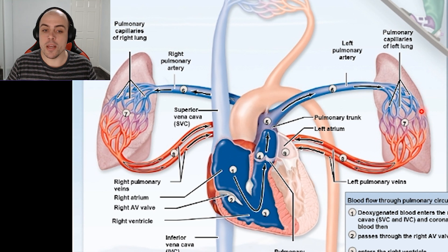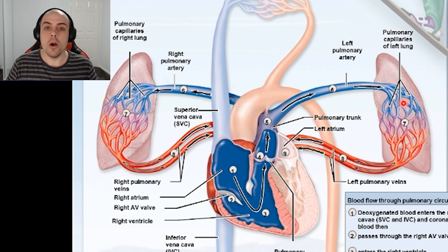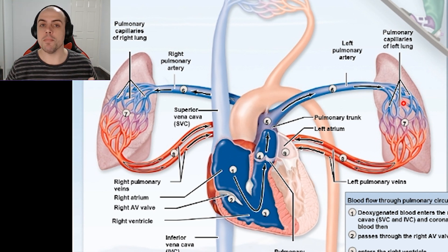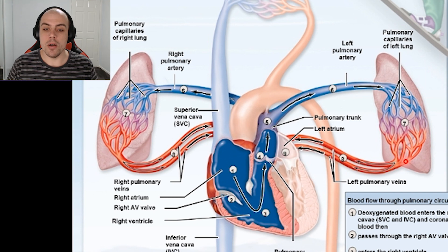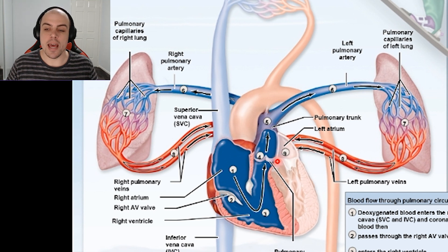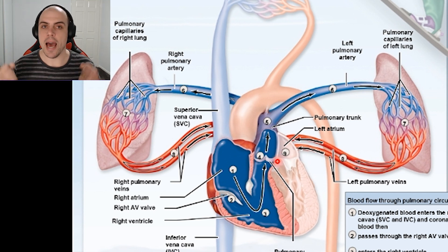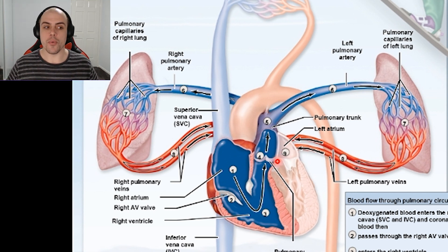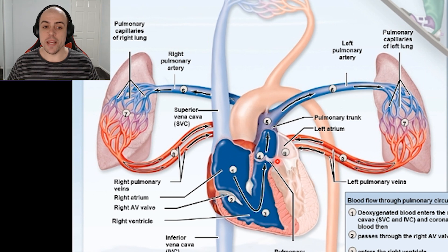From our pulmonary capillaries, the freshly oxygenated blood moves down our pulmonary venules, down to our pulmonary veins, and we then reach the left atria. So a quick recap — this entire pulmonary circuit starts in the right atria.